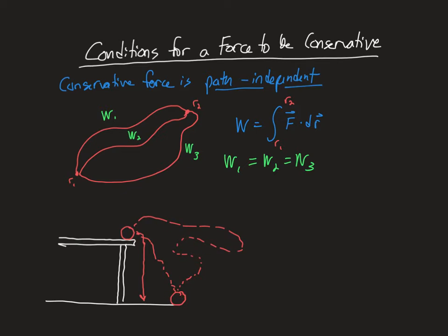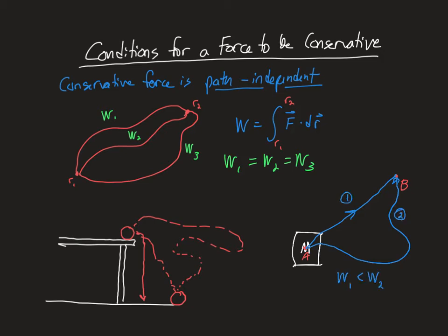This is different from forces that depend on the path. The best example is the force of friction. If we have a block of mass M and we want to take it from point A to point B, and there is friction between the box and the ground, going from A to B directly requires a certain amount of work due to friction. But if we take a longer path to point B, we're obviously going to do more work against friction because friction acts along the entire path. So the work done along path one is less than along path two — and to be clear, I'm talking specifically about the work done by friction here.